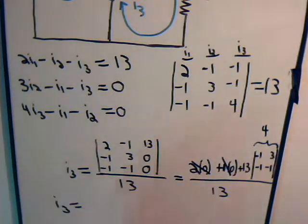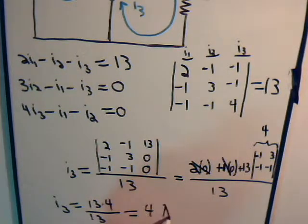So I3 equals 13 times 4 divided by 13, which is 4 amps. So there is I3.